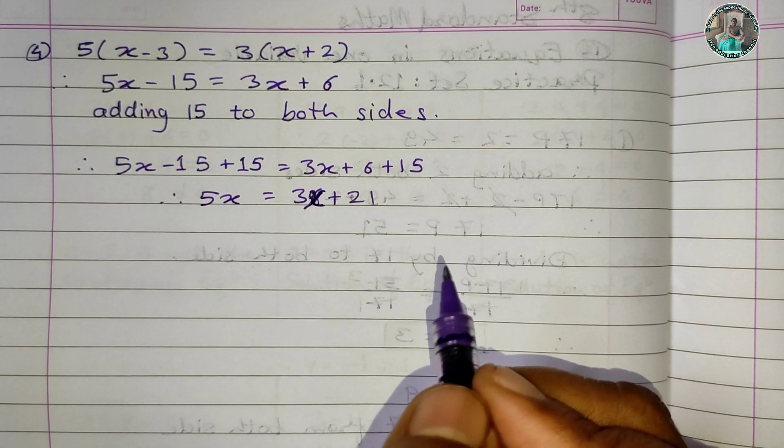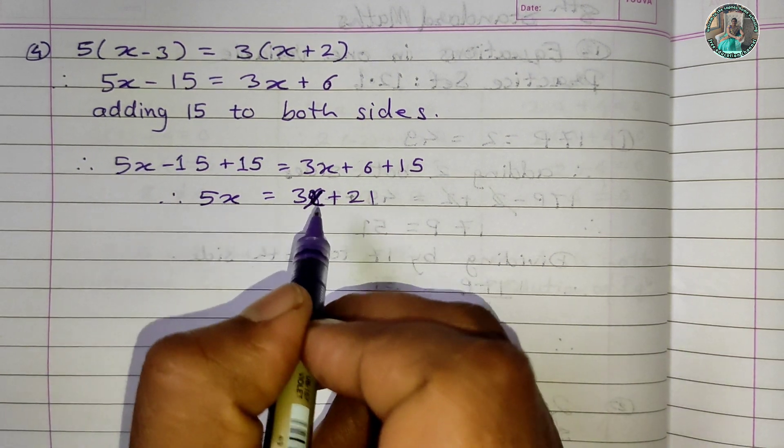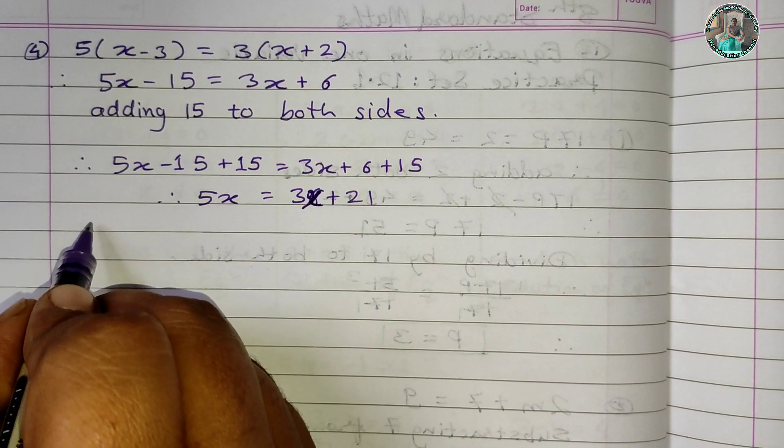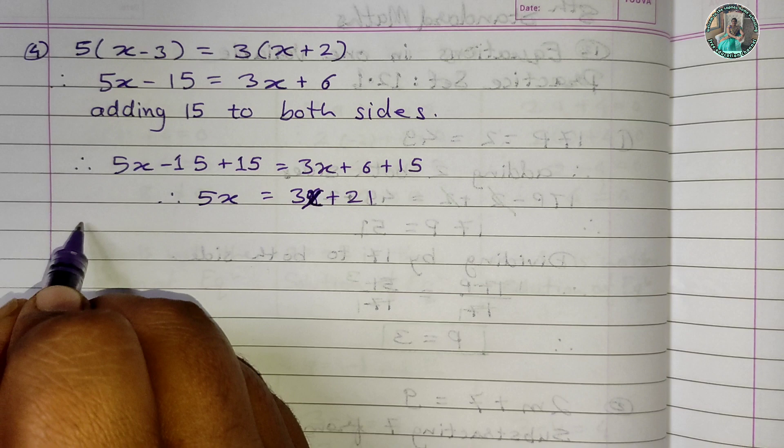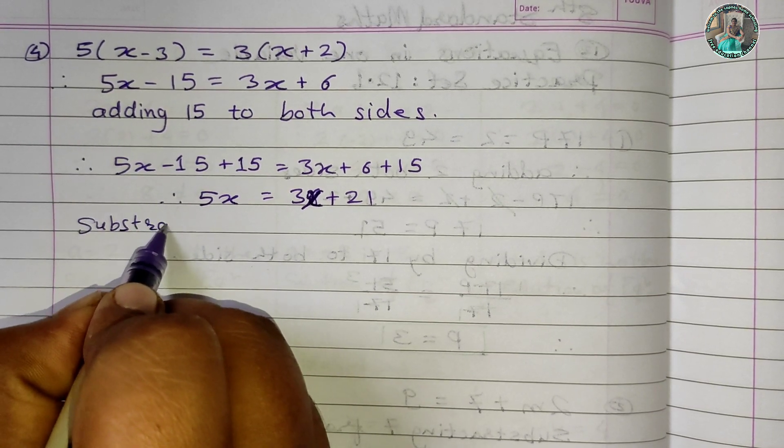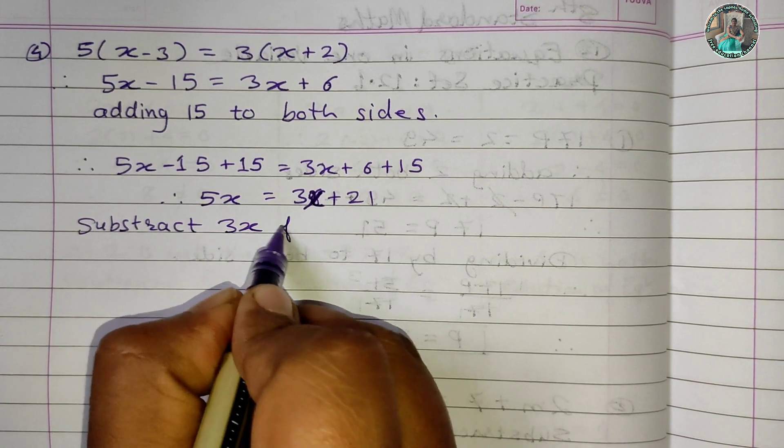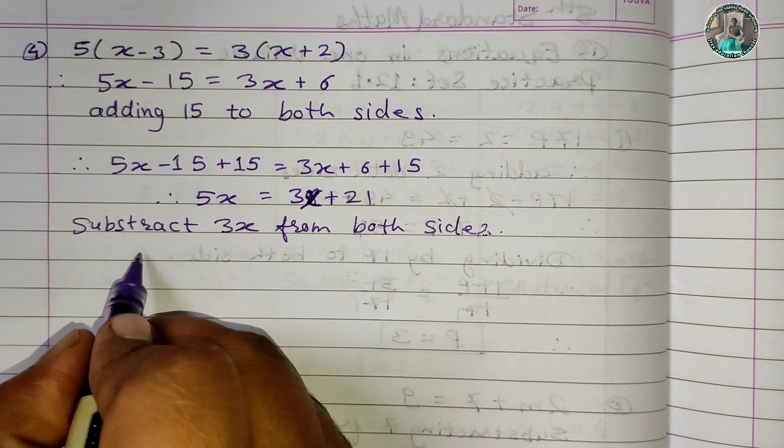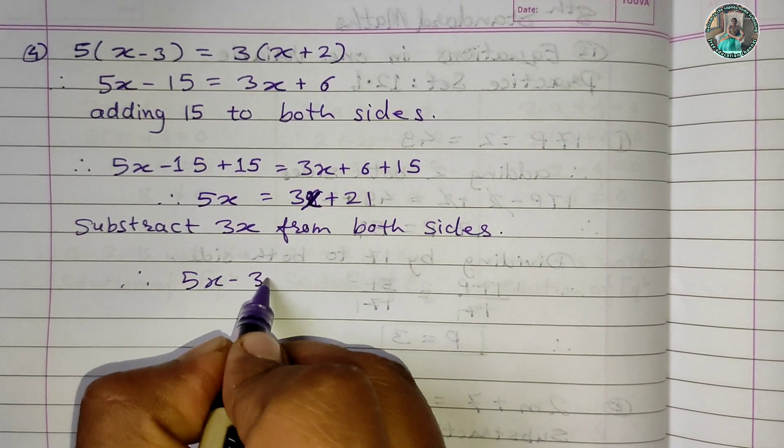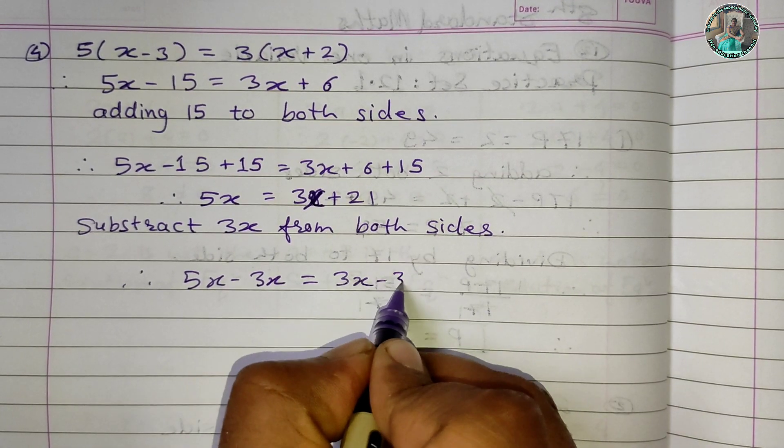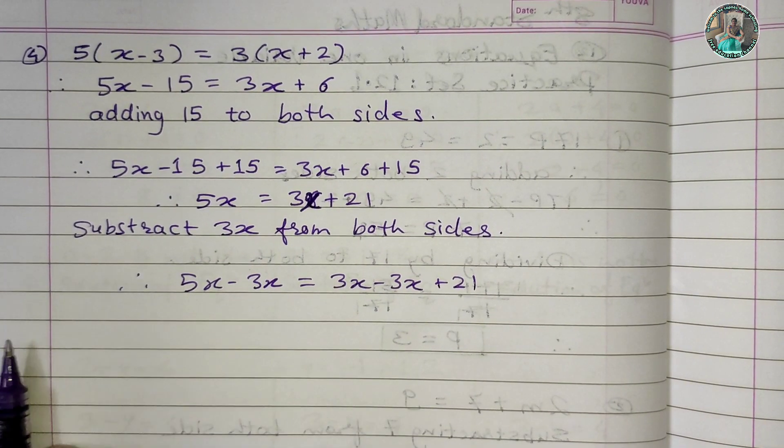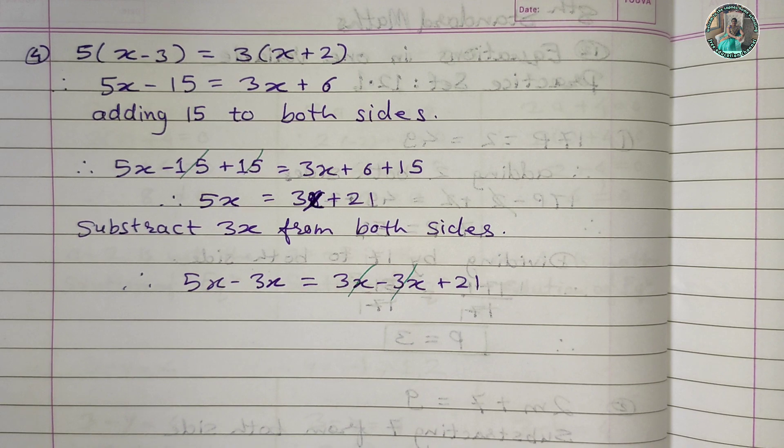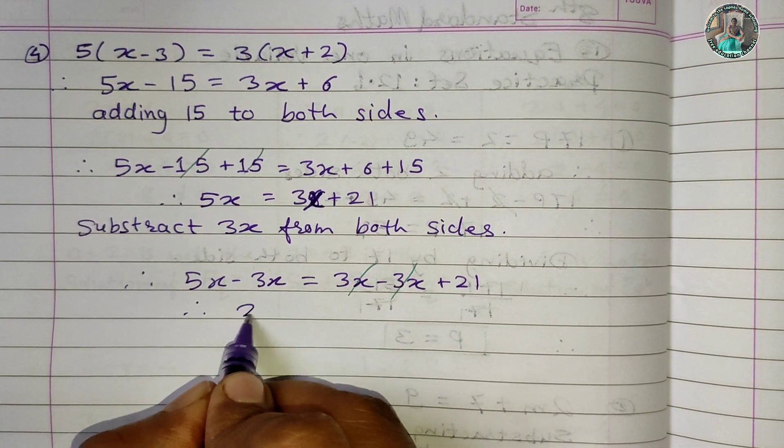Adding 15 to both sides: 5x - 15 + 15 = 3x + 6 + 15. This gives 5x = 3x + 21. Subtracting 3x from both sides: 5x - 3x = 3x - 3x + 21, which gives 2x = 21.